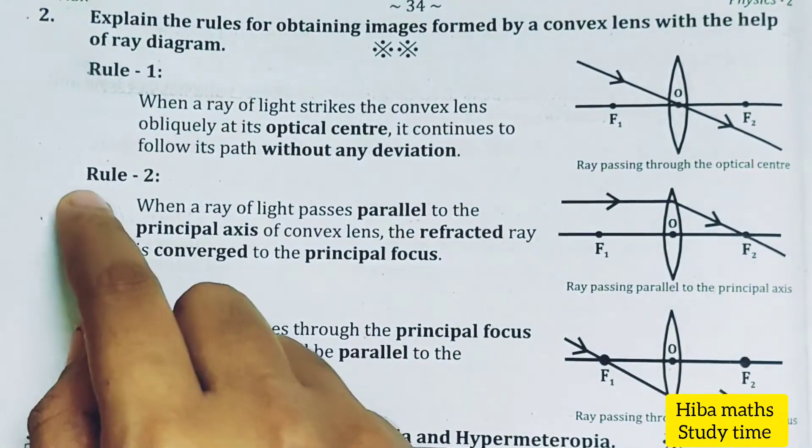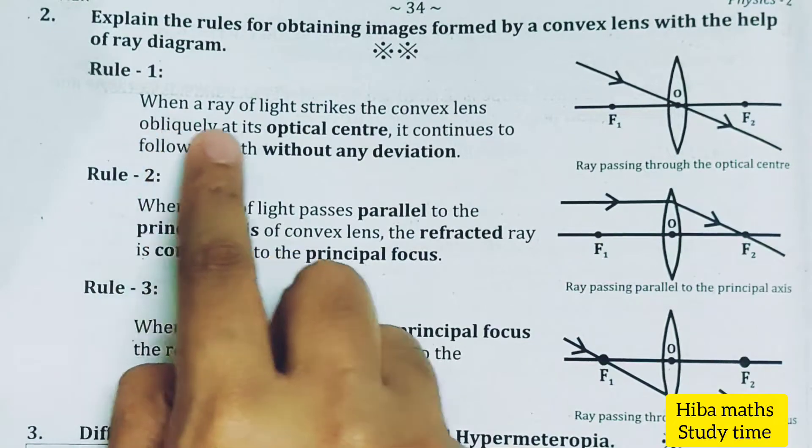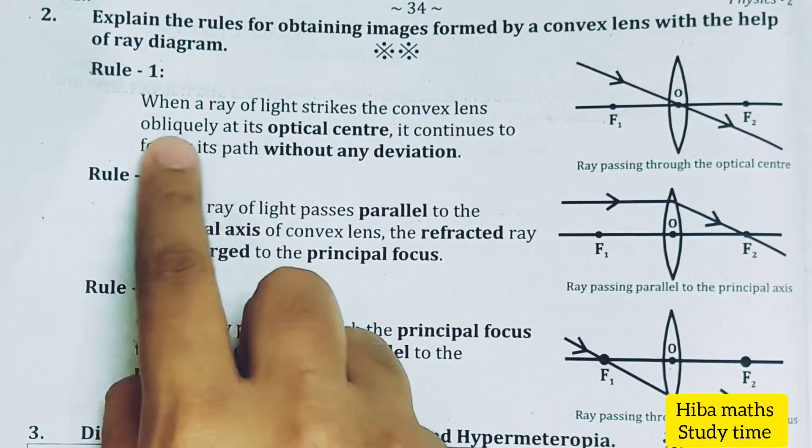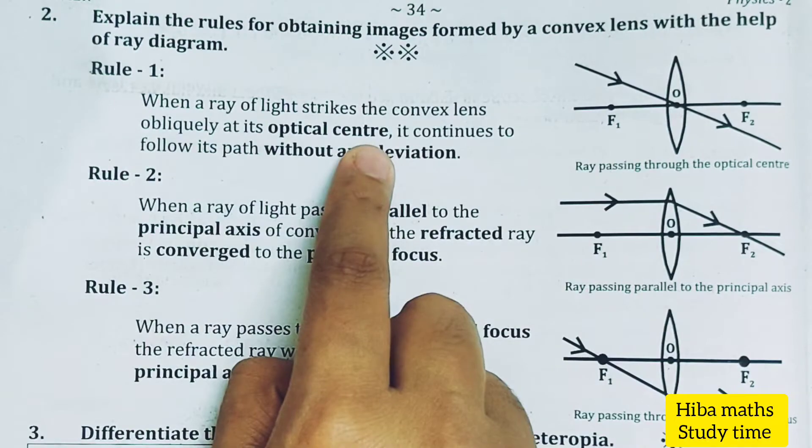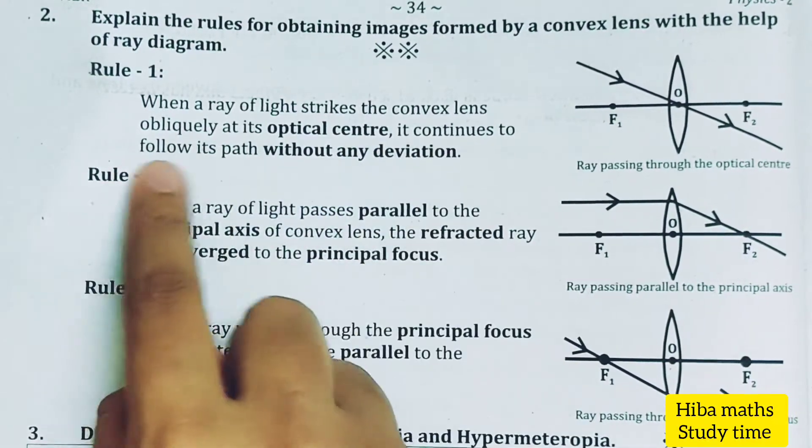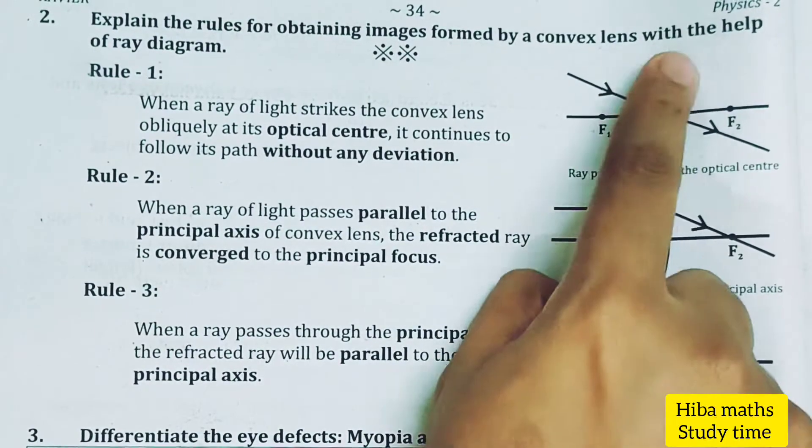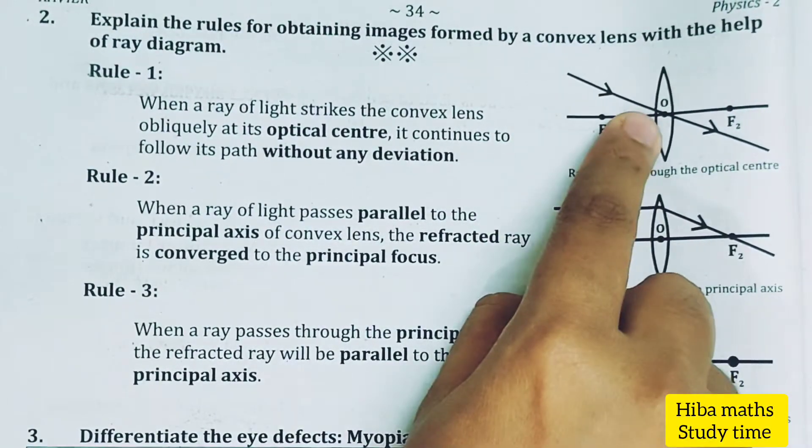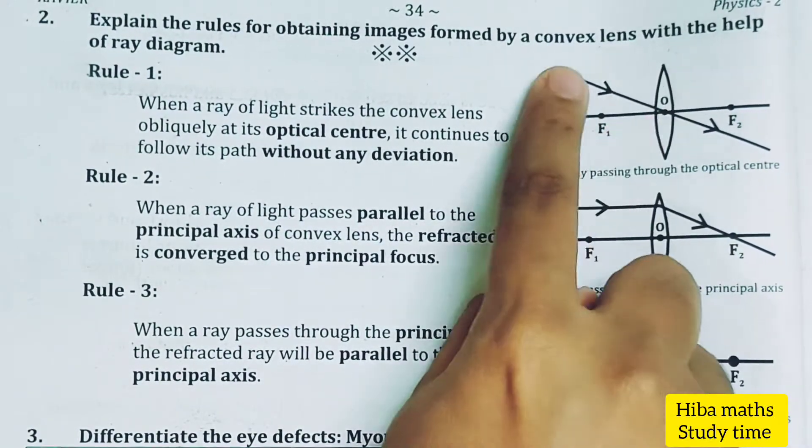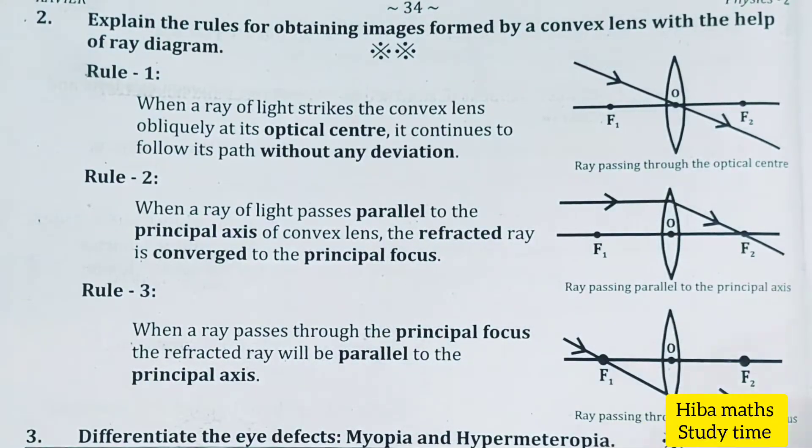For the ray diagram, I'll explain the first rule. When a ray of light strikes the convex lens obliquely at its optical centre, it continues to follow its path without any deviation. This is our lens - the light comes to the center of the lens, goes diagonally away, and is not deviated.